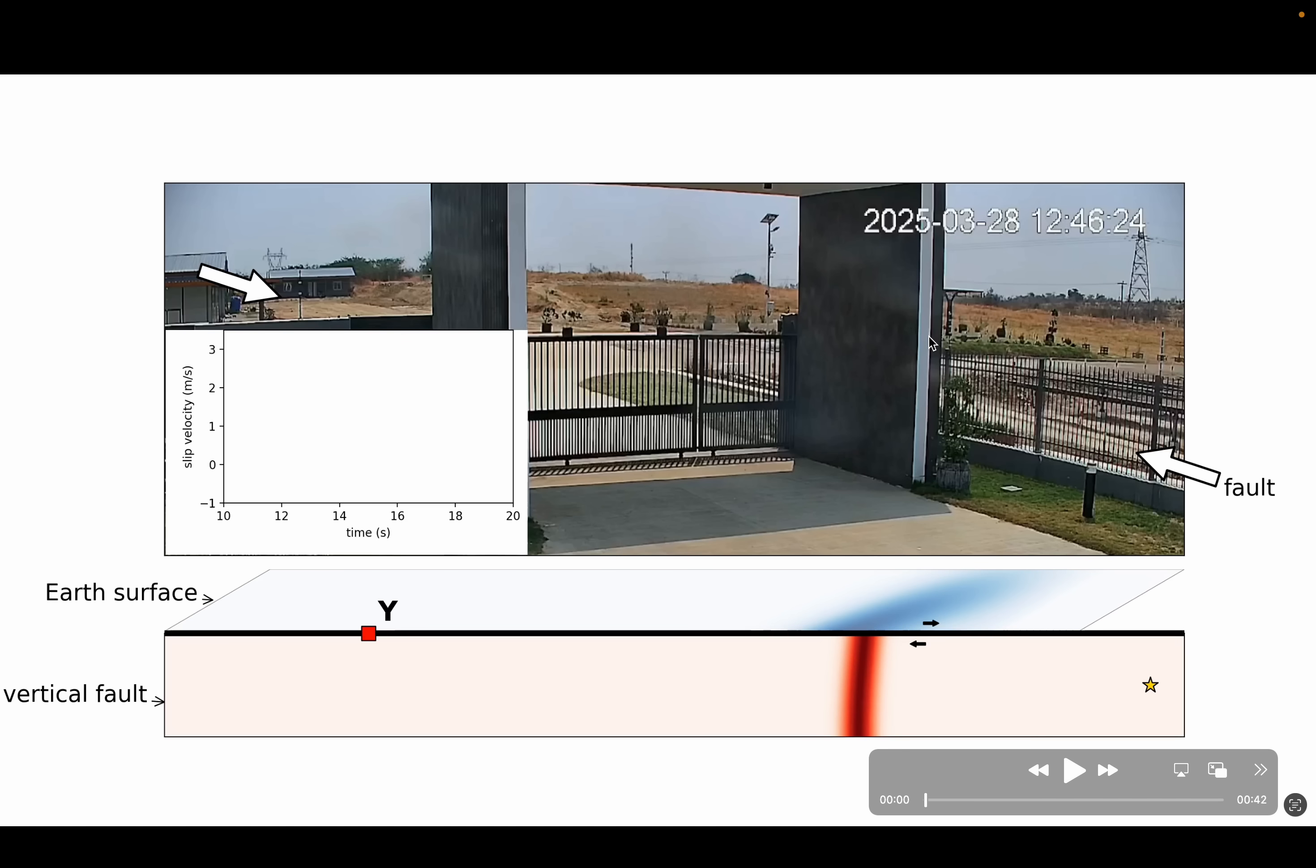Now later in the video, as the rupture arrives from the right and from behind the camera, this pole along with everything around it will move to the right, so watch out for that.